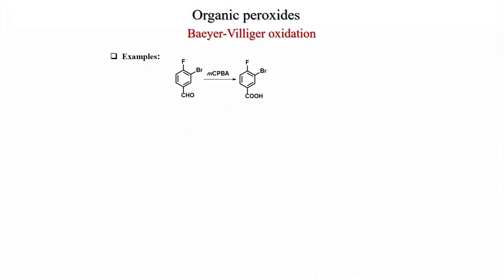Here are some examples. With 4-bromo-3-fluorobenzaldehyde, MCPBA oxidation (Baeyer-Villiger oxidation) gives the acid. Here H migrates instead of the aryl group. Earlier we stated that phenyl migrates more than alkyl, more than hydrogen — but here hydrogen migrates because the aryl group bears two electron-withdrawing substituents (bromo and fluoro), so it is not migrating.